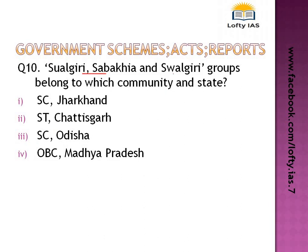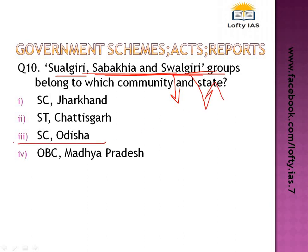Question 10: communities recently given a particular status in a particular state. A presidential order had to be passed and then made into an act. The communities Swalgeri, Sabakhia, and Swalgeri are present in Odisha state, and they have been given the status of Scheduled Caste. This is the correct option.